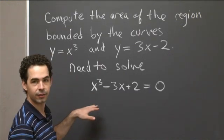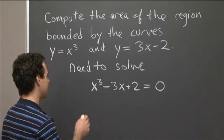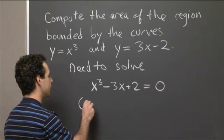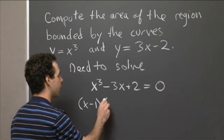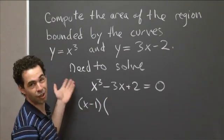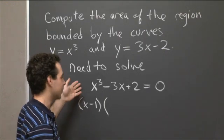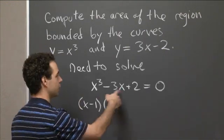So in other words, we can factor the left-hand side. We can divide out a factor of x minus 1. And so now we have to do long division or synthetic division, whatever kind of division you want to divide through here.